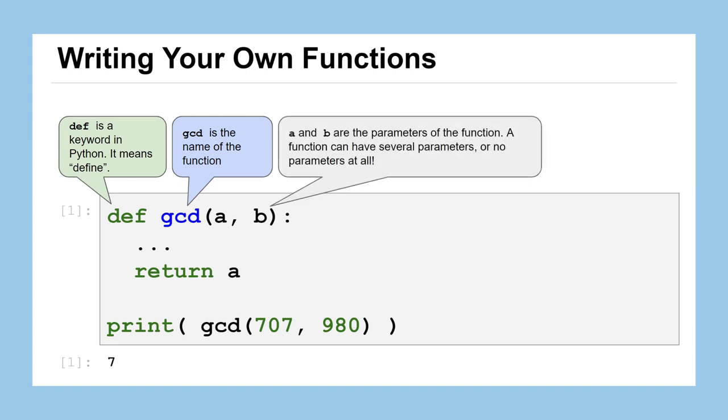A and B are what we call the parameters of the function. It's the name of the inputs. And a function can have several parameters like we see here, two, three, four or more, or it can have no parameters at all. It's up to you. It depends on what you need for your function to work.